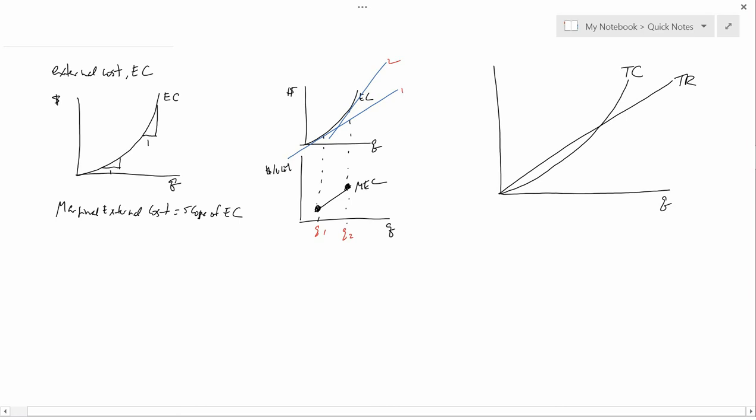Society wants to also include external cost in this. External cost is not included in TC. Now, why is external cost not included in total cost? Well, because the term total cost is used in all other areas of economics that don't have pollution and don't have external cost.